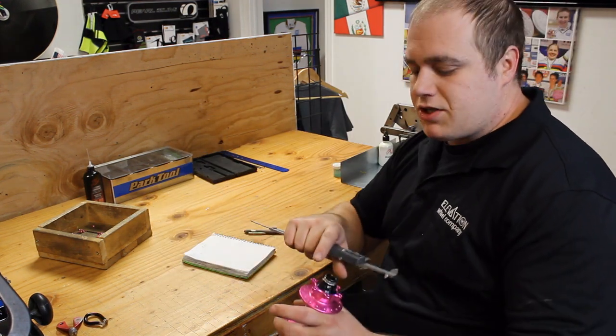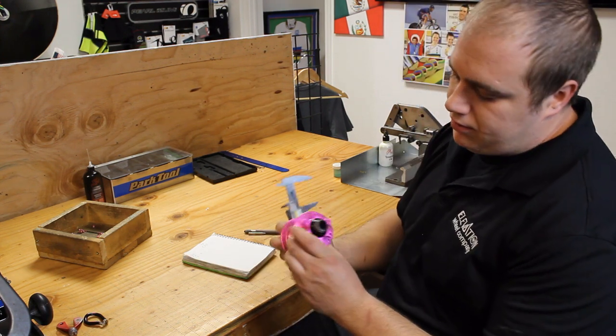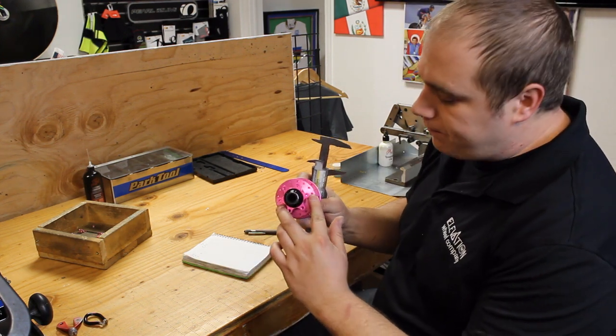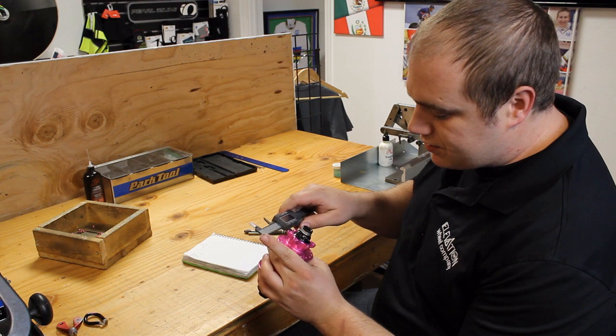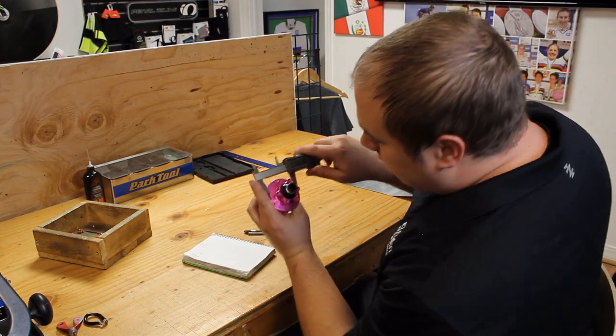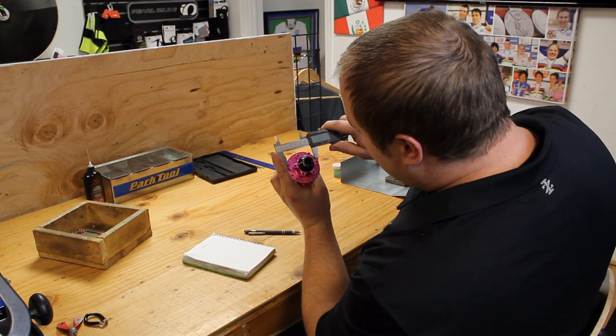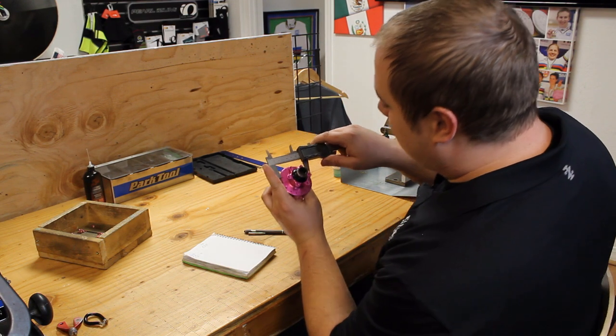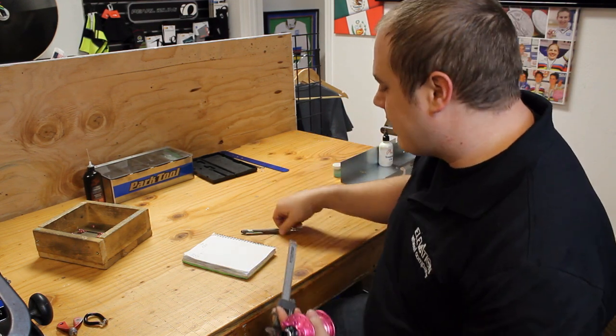Next up, you need to measure flange diameter. So, spoke hole to spoke hole. Really easy to do this one. Just put the calipers over both spoke holes and measure that. This one is around 57 millimeters.